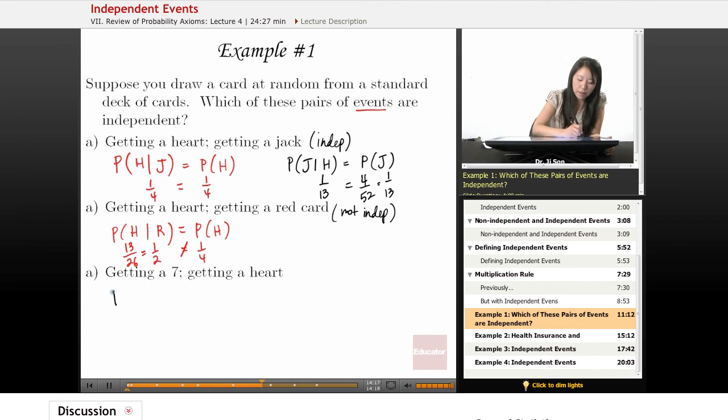What about this last one? The probability of getting a 7 given heart. And is that equal to just the probability of getting a 7? Well, let's see. So the probability of getting a 7 is that there's four 7s, one for each suite, out of the 52 cards. So 4 out of 52.